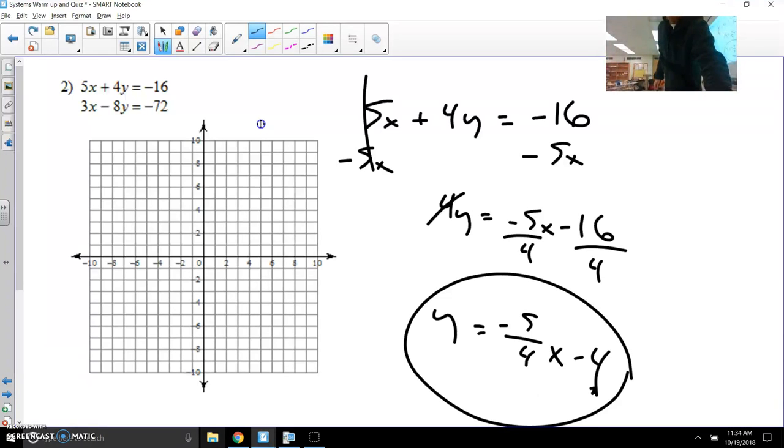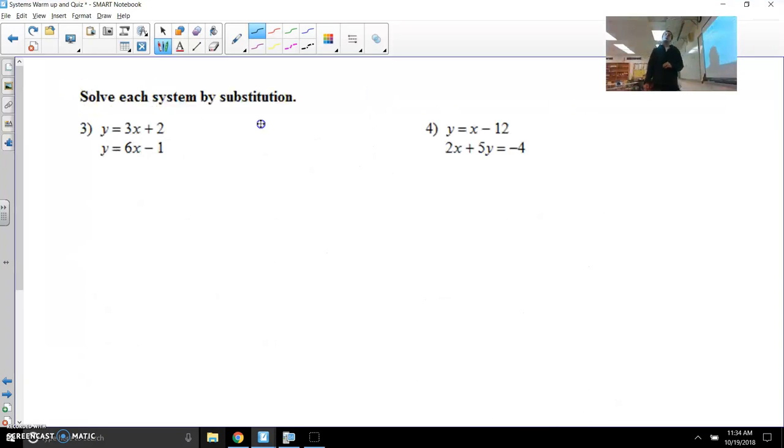You can either graph that in y equals and get that graph going, or you can just start with that y-intercept value that we talked about a minute ago, and then use that slope to find the next point. I'm going to let you try to do the other one in terms of solving for y so that you can graph that correctly. You're looking for the point where they cross.